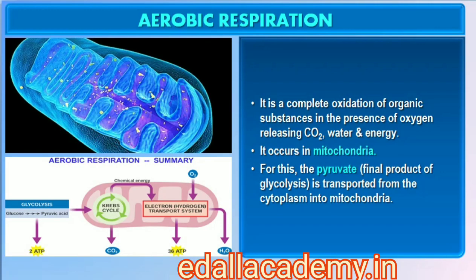What is the process by which organisms can carry out complete oxidation of glucose and extract the energy stored to synthesize a larger number of ATP molecules needed for cellular metabolism? In eukaryotes, these steps take place within the mitochondria and require O2. Aerobic respiration is the process that leads to complete oxidation of organic substances in the presence of oxygen, and releases CO2, water and a large amount of energy. For aerobic respiration to take place within the mitochondria, the final product of glycolysis — pyruvate — is transported from the cytoplasm into the mitochondria.